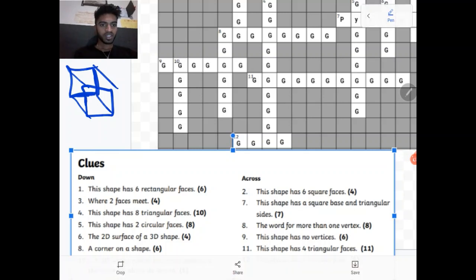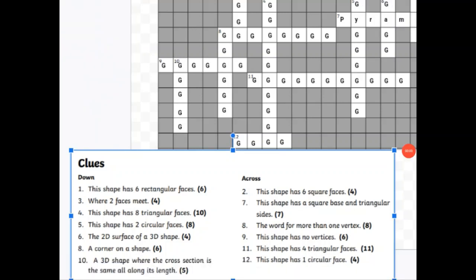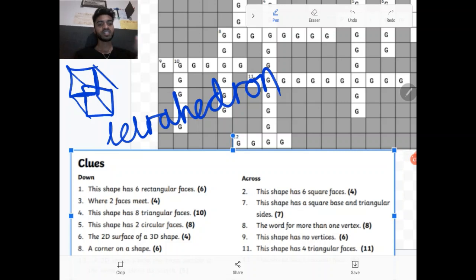This shape has eight triangular faces. Okay question number four going down. This shape has eight triangular faces. So that would be an octahedron. Octa meaning eight, often like octagon. This shape has two circular faces. That is a cylinder because it has one circle at the top and one circle at the bottom. Five, six, seven, eight. Yeah seven letters.